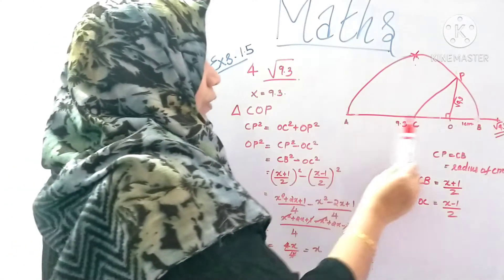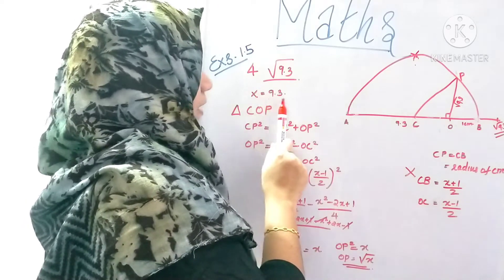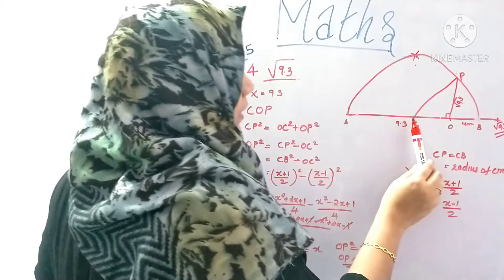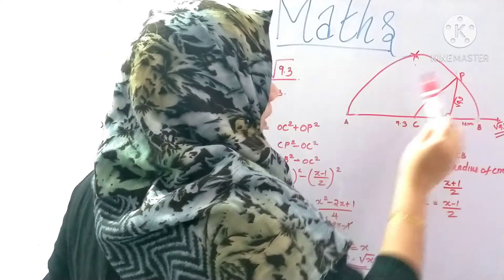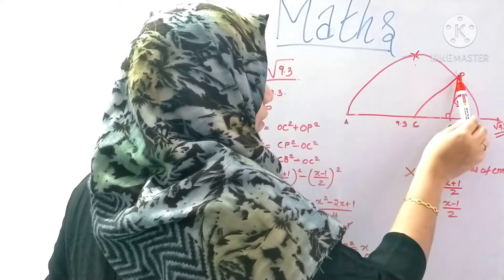Now A, O is 9.3. That's why we put it in X. Then X is equal to 9.3. This triangle is C, O, P. We can consider it.